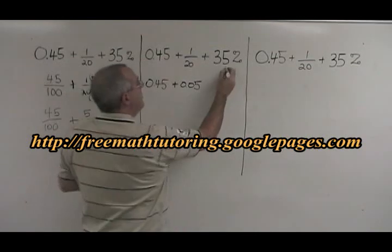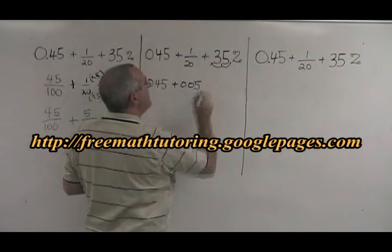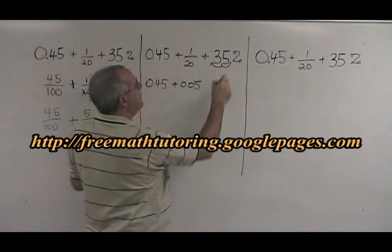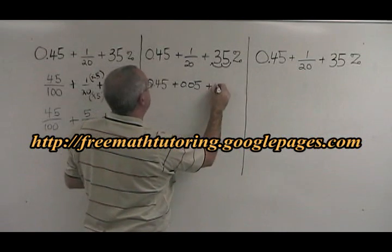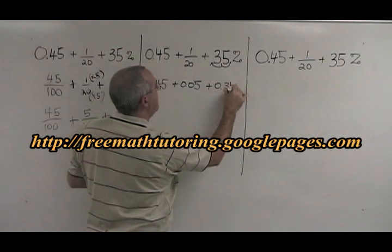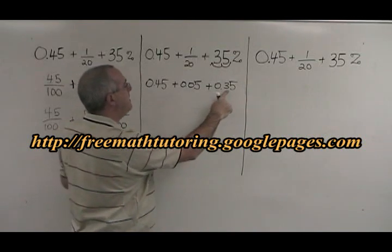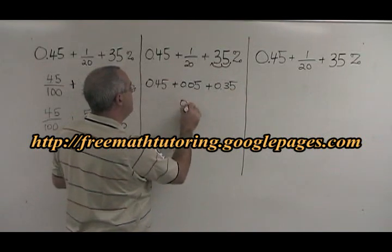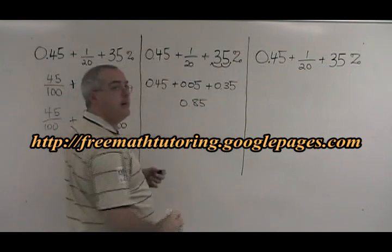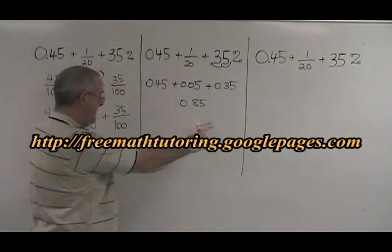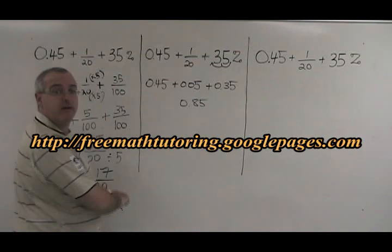35%, we know there's a decimal here. 35% becomes 0.35. 0.45 plus 0.05 plus 0.35 is equal to 0.85. And 0.85 is equivalent to the fraction we got here, 17 over 20.